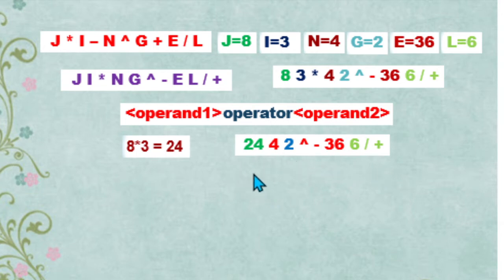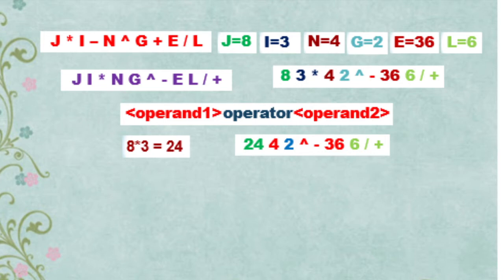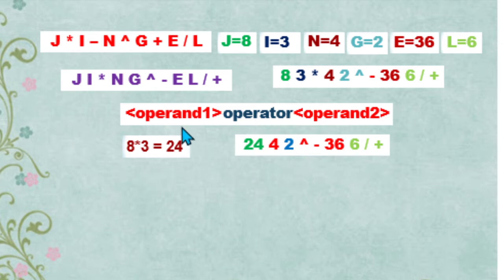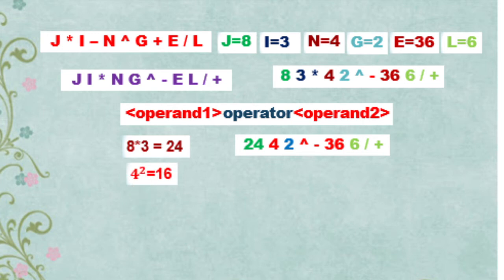Then we scan again this expression from left to right and look for the first operator. We have 24, 4, 2, then the exponent symbol — this is our first operator. The immediate two operands to its left are 4 and 2, where 4 is operand 1 and 2 is operand 2. We perform exponentiation: 4 raised to the second power is equivalent to 16.